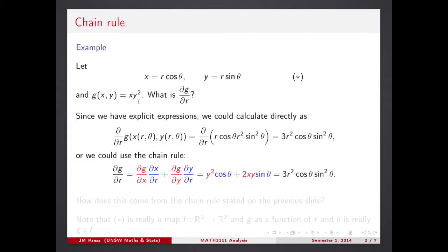You take the derivative of g with respect to its first own argument, then the function of that first argument by r, then g by the second own argument, and y by r, and then you make substitutions. g by x is y-squared — substituted. x by r is cos theta. g by y is 2xy, and then sin theta. Eventually we end up with the same expression as with the direct computation.